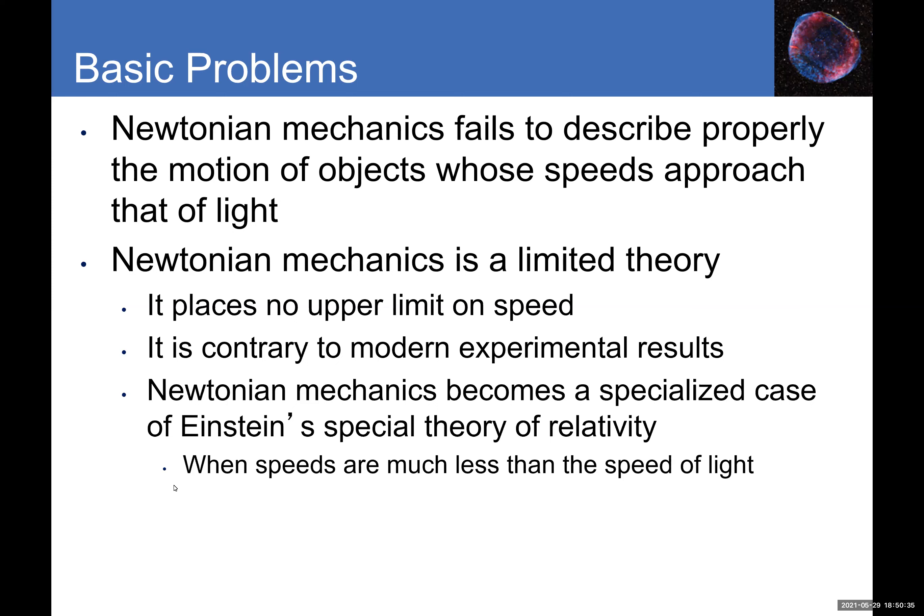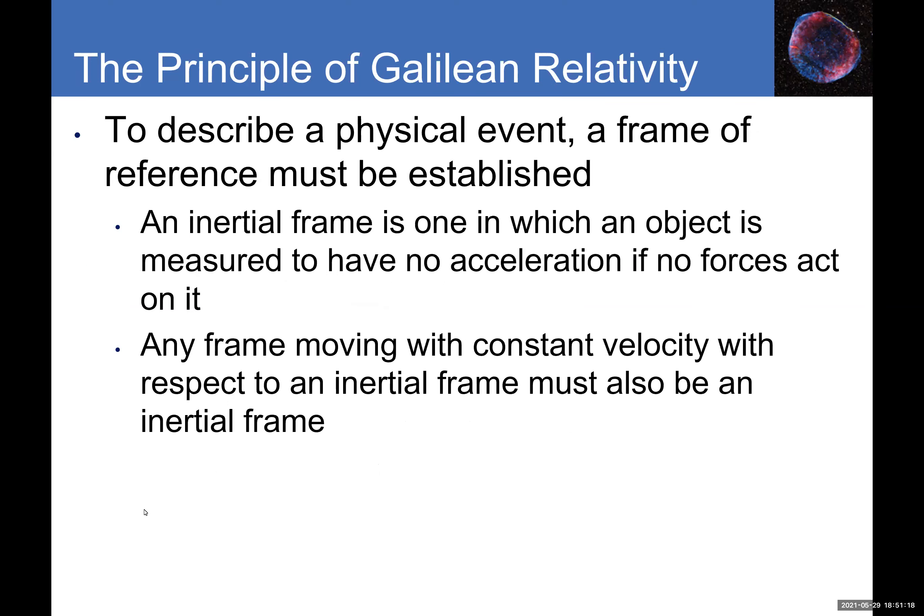Einstein gave us two relativity theories. Special relativity deals with objects moving very fast — at speeds comparable to the speed of light. General relativity is a completely different concept that replaces the theory of gravity. General relativity is another way of describing gravity, and it's incredibly insightful — probably one of the most brilliant ideas in all of human existence.